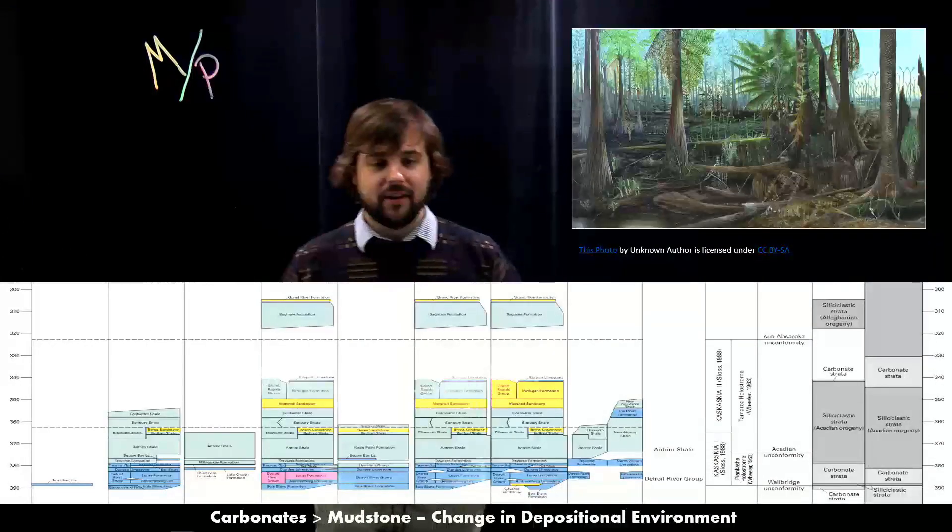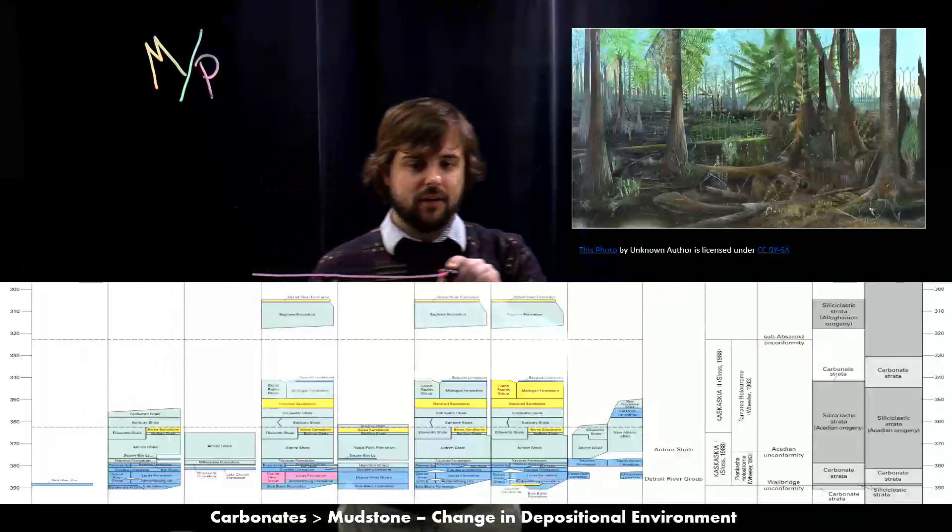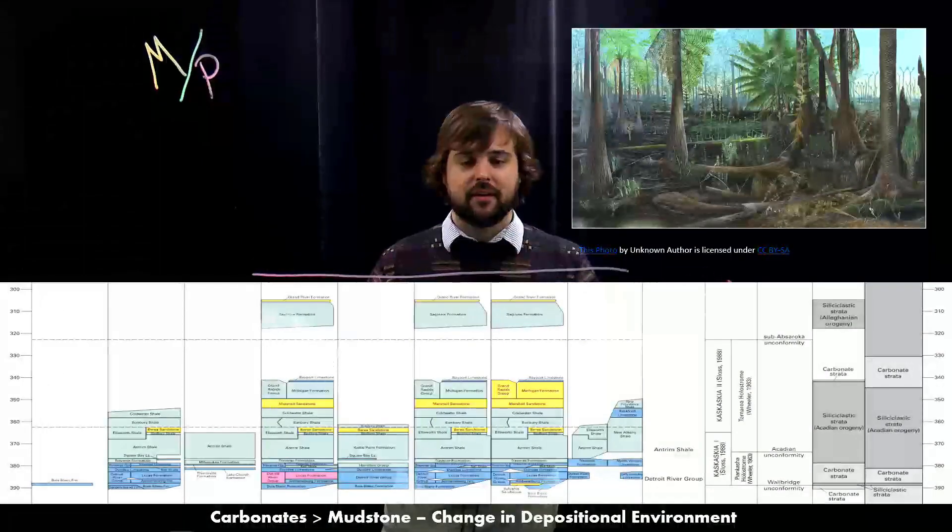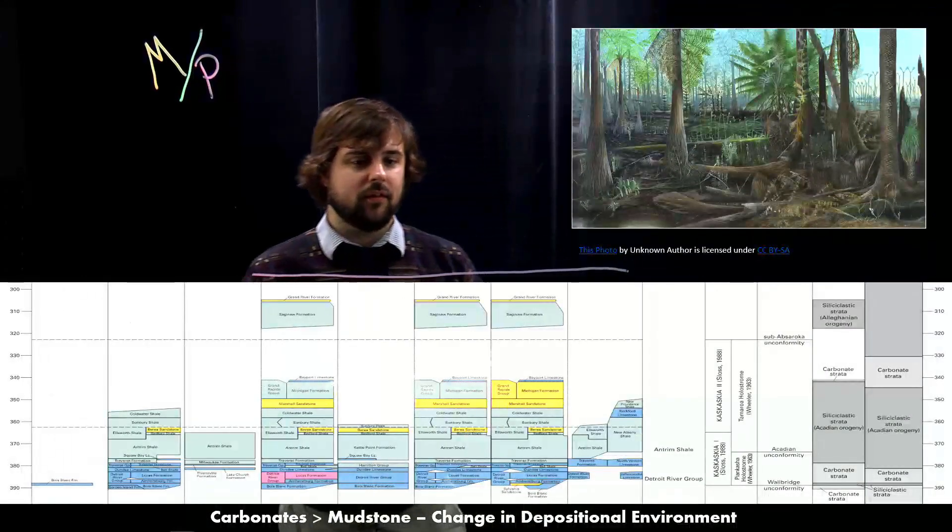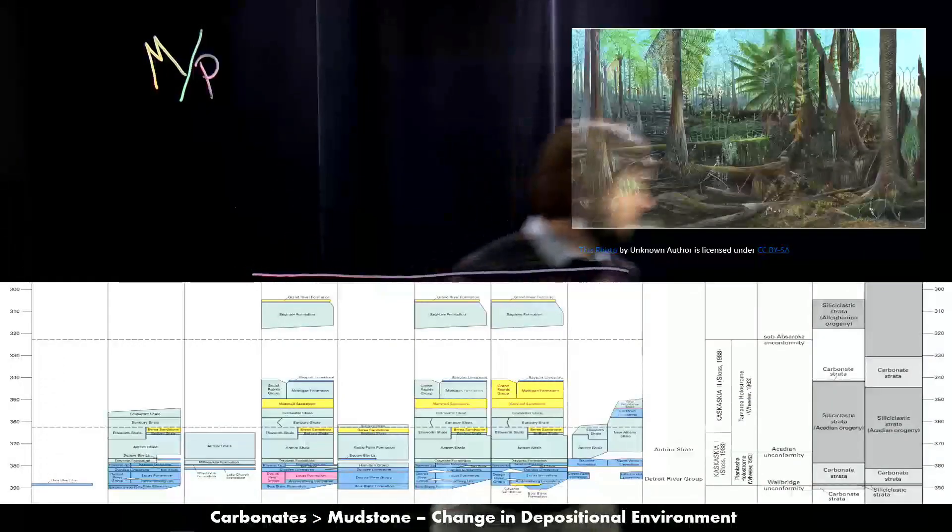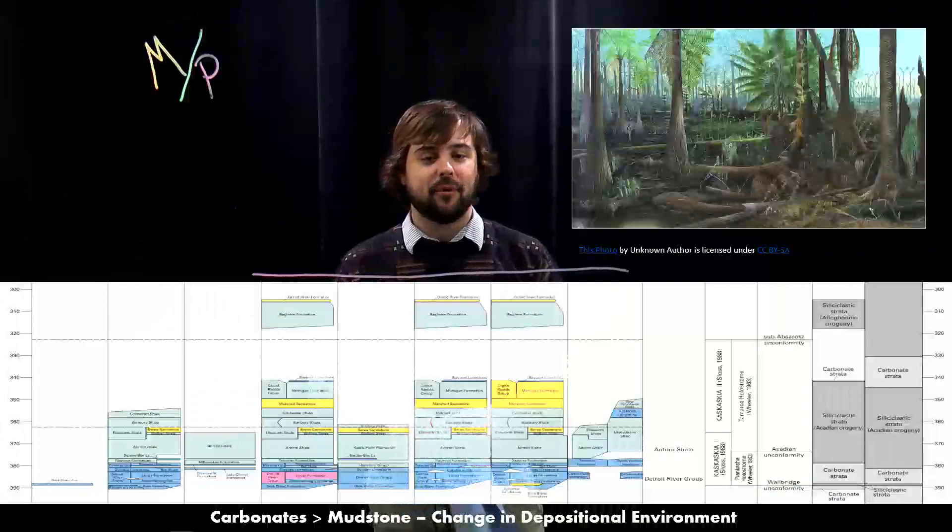Of course, up until this area right here, this line I'm going to draw, because that's it. That's pretty much where the Michigan Basin ends as far as rock layers go. So there is one more, but it's a little bit more complicated, and we'll go over it next.